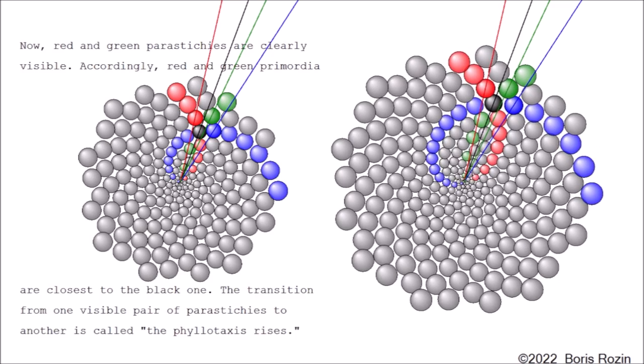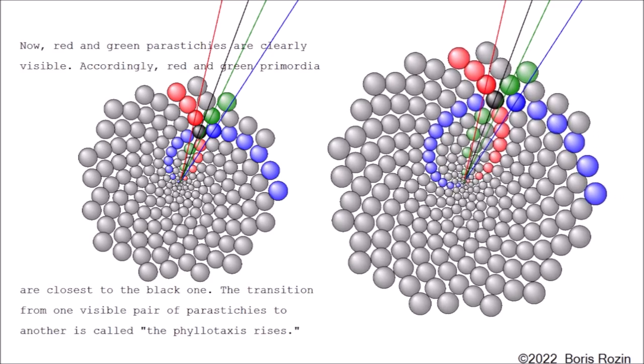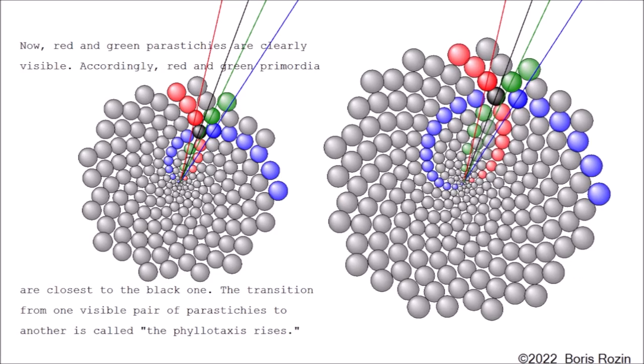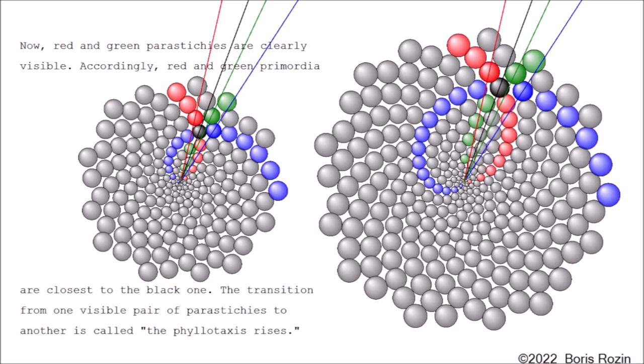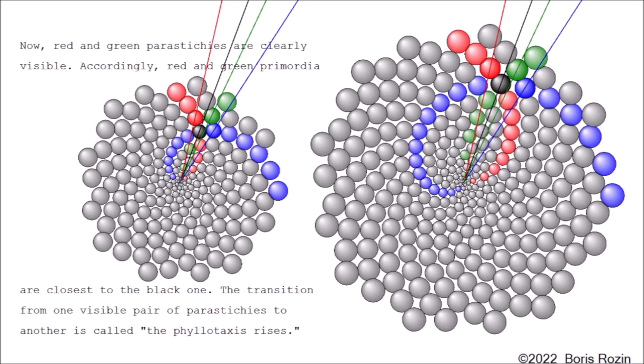Now, red and green parastichies are clearly visible. Accordingly, red and green primordia are closest to the black one. The transition from one visible pair of parastichies to another is called the phyllotaxis rises.